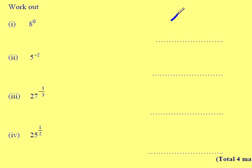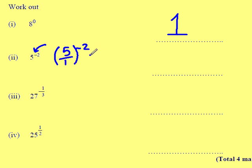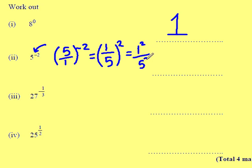Anything to the power of 0 will be 1. 5 to the power of minus 2 — again a reciprocal. Change it to a fraction and turn it upside down to remove the minus. Square the top and square the bottom. That leaves me with 1 over 25.